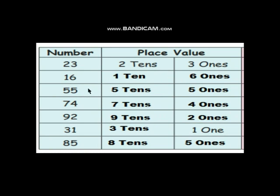The next number is 55 — 5 tens and 5 ones. 74 — 7 tens and 4 ones. 92 — 9 tens and 2 ones. 31 — 3 tens and 1 one.